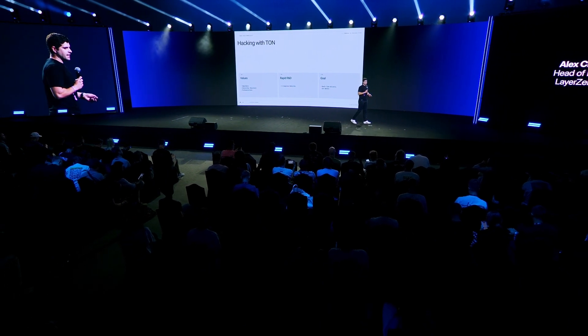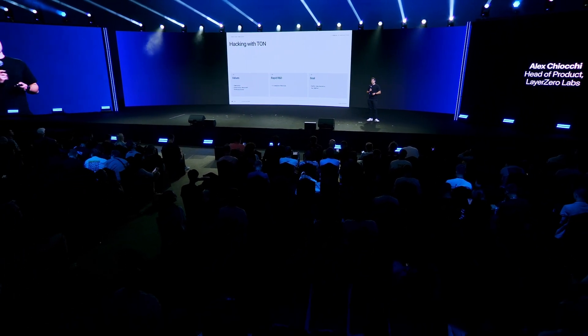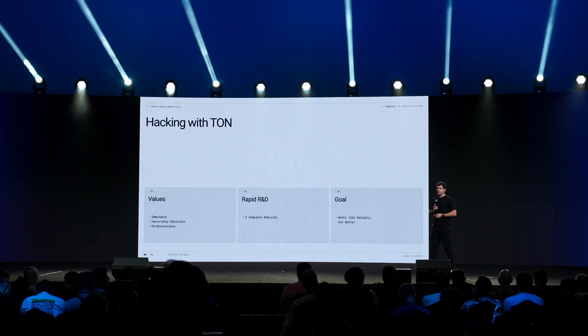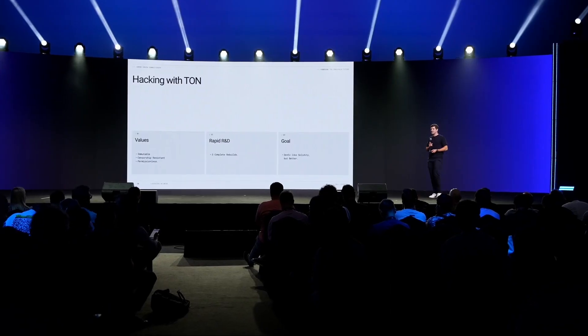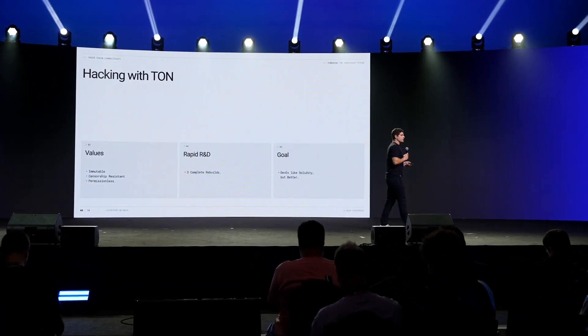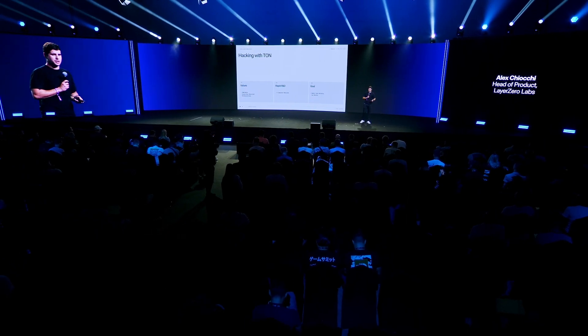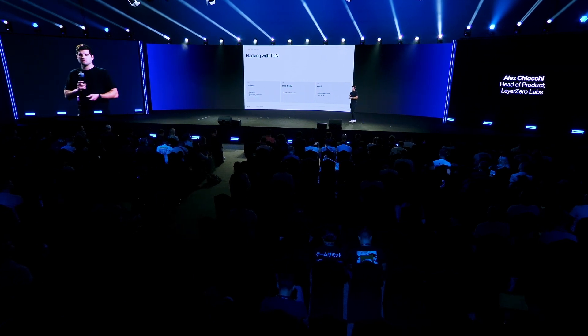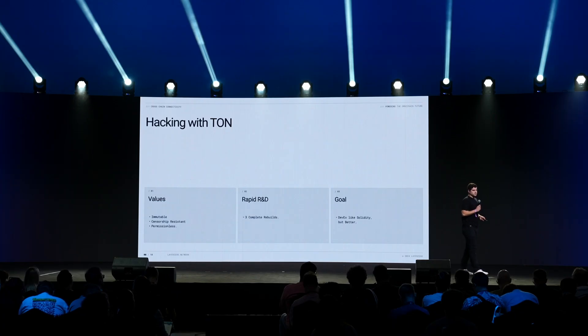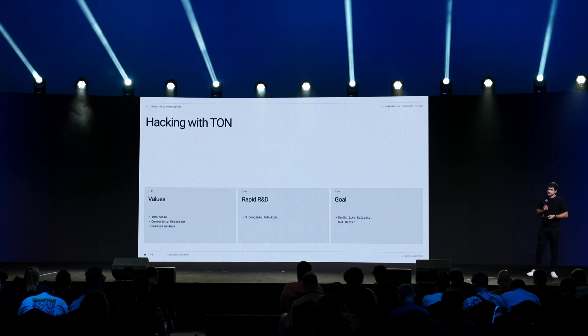With immutability, you can then have permissionlessness — because the rails can't be corrupted, you don't have to rely on a service provider to make your application. This is very important because if Layer 0 Labs were to cease to exist tomorrow, any application built on this technology could continue to run. And ultimately this creates censorship resistance. It is incredibly important to remember that when building a protocol and complex DeFi application, there are many places where without censorship resistance, if somebody doesn't like a transaction — maybe it's moving a token value they find inequitable — it can be corrupted. These values and principles led us to do three rapid, complete rebuilds over many months with the TON team.